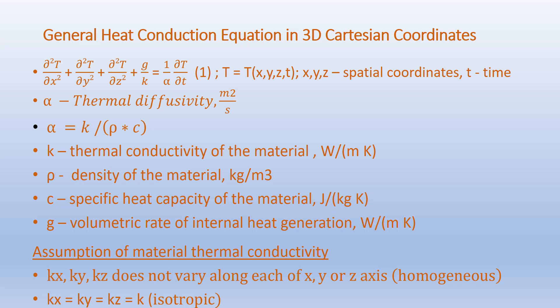The general heat conduction equation in 3D Cartesian coordinates is: ∂²T/∂x² + ∂²T/∂y² + ∂²T/∂z² + G/K = (1/α)(∂T/∂t). The uppercase T is the temperature, which is a function of the spatial coordinates x, y, z, and time. Alpha is the thermal diffusivity given in watts per meter squared per second.